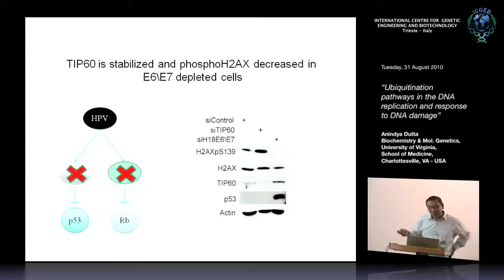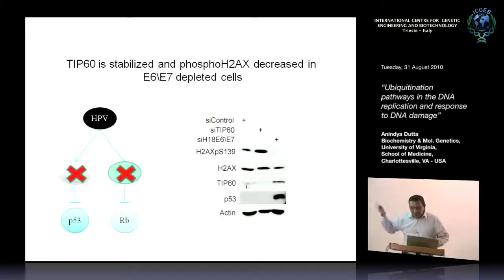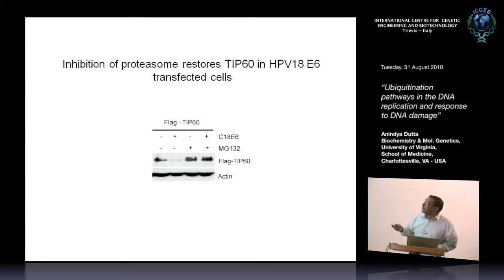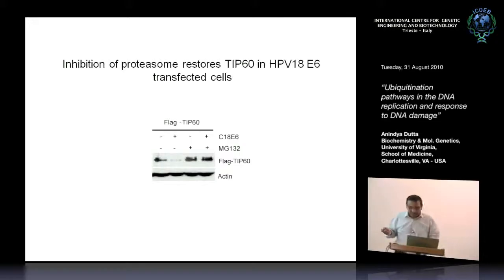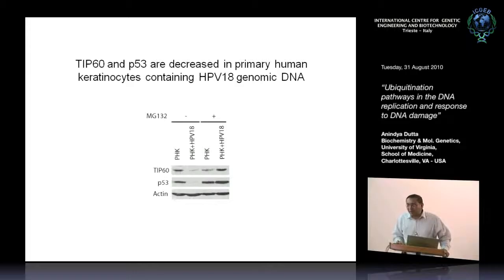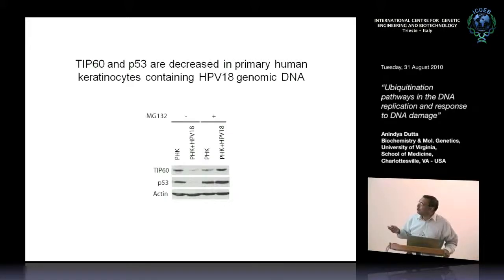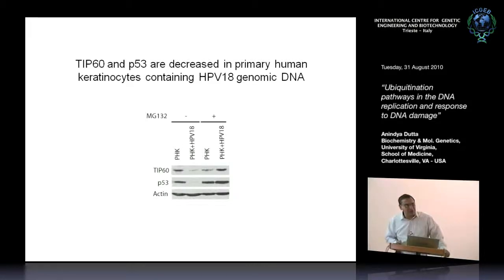That turned out to be right. siRNA of E6 causes TIP60, which is barely detectable in HeLa, to come up dramatically — the same way as P53. When we transfect flag-TIP60 with HPV18-E6, the flag-TIP60 is decreased; if you add MG132, flag-TIP60 is stabilized. We went to Louise Chow and got primary human keratinocytes with and without HPV18. TIP60 levels are low in the HPV18-containing keratinocytes; add MG132 and TIP60 levels increase. The half-life of TIP60 is significantly affected by the presence of E6. In normal HeLa, TIP60 decreases very rapidly, but adding siRNA that knocks down HPV18 E6 and E7, TIP60 is significantly stabilized.